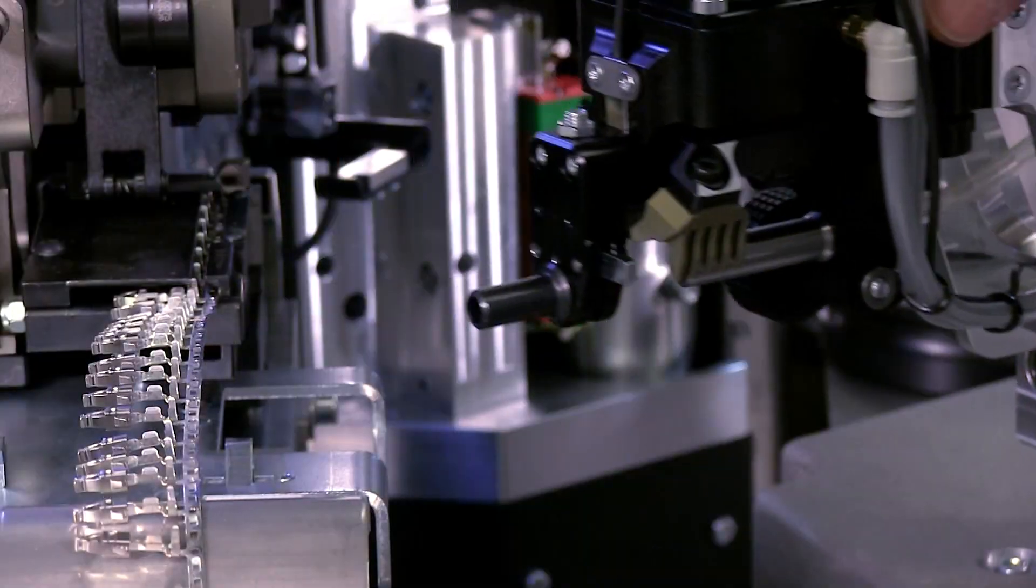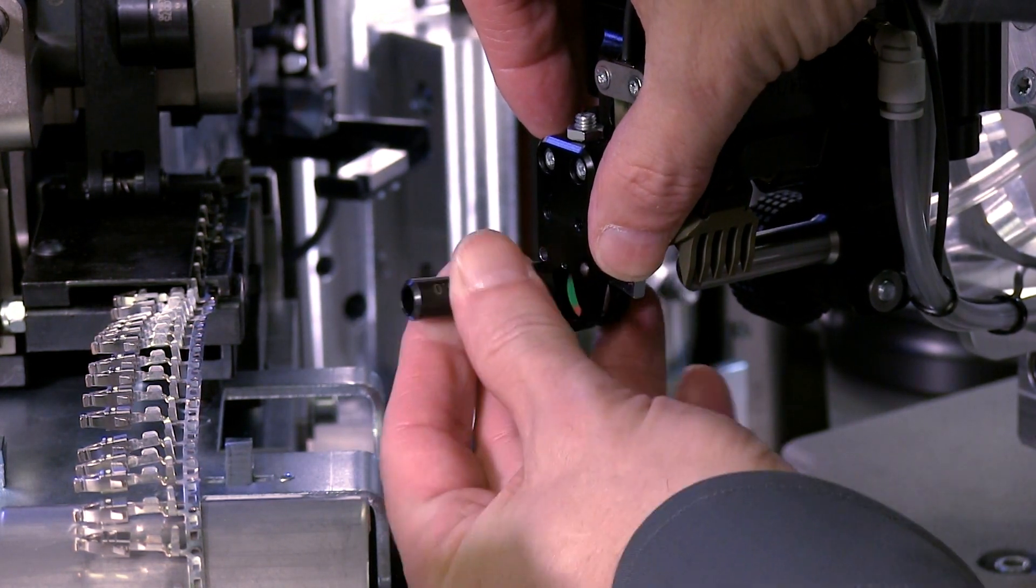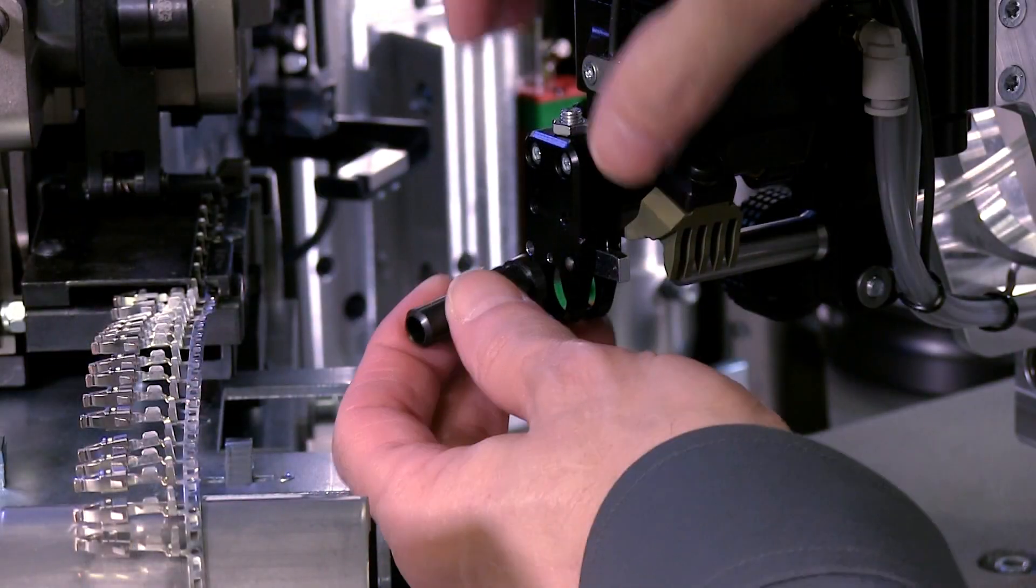To reduce machine downtime, the Crimp Center 6-Series machines utilize quick-change mechanisms, wire feed assist, and integrated lighting.